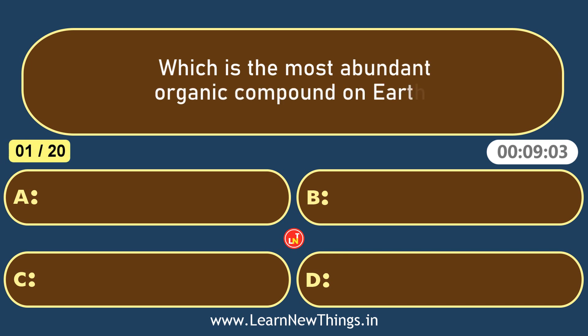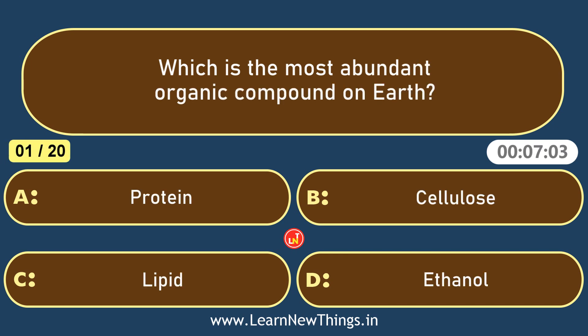Which is the most abundant organic compound on earth? Cellulose.